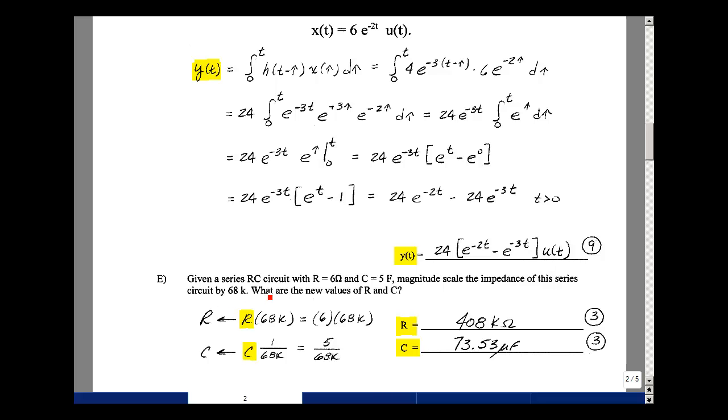And the last question is, given a series RC circuit, can you magnitude scale the impedance of this series circuit by 68,000? And if you do, what are the new values R and C? If you recall from our Chapter 11 discussion,